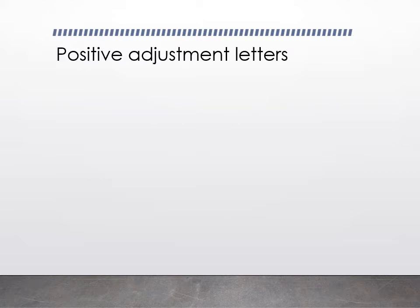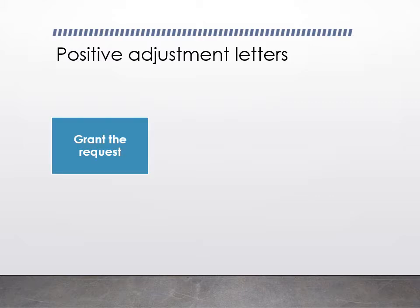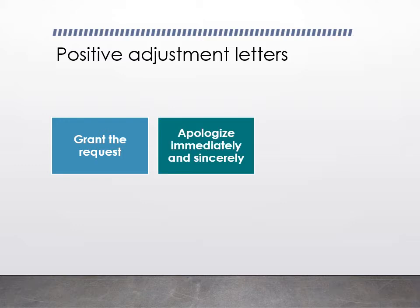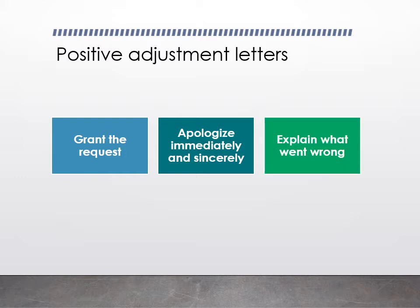Positive adjustment letters grant the request sought in the claim letter. Because you're saying yes, they're very short and simple letters. You begin by apologizing — you're typically granting the request because you did something wrong or there was something wrong with your product, so you want to come right out and apologize and briefly explain what went wrong.